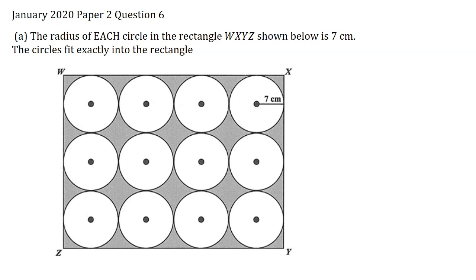Part A. The radius of each circle in the rectangle WXYZ shown below is 7 cm. The circles fit exactly into the rectangle. Part 1.